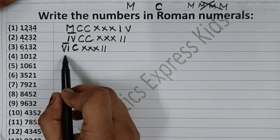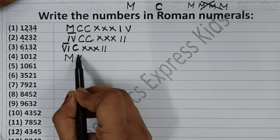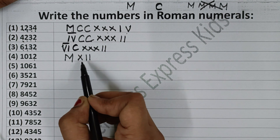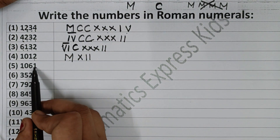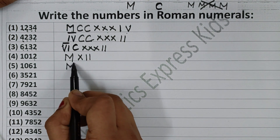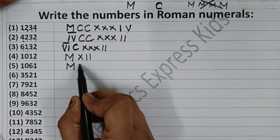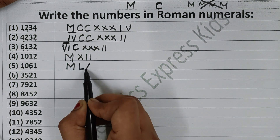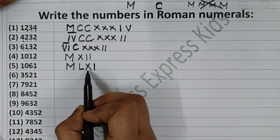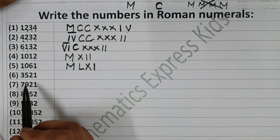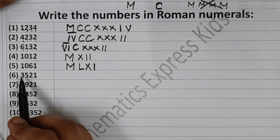Now 1012: 1000 is M, and for 12, first write 10 as X, then 1 as I, and 2 as II — so XII. Now 1061: first write M for 1000. For 61, first write 50, which is L, then 10, which is X — that gives 60 — then 1 as I. So 1061 is MLXI. Clear?